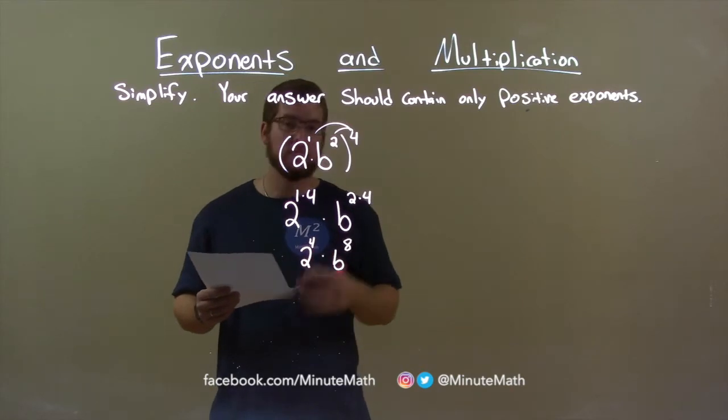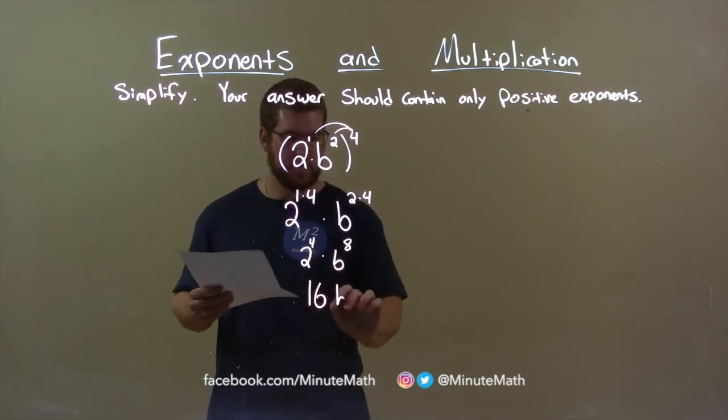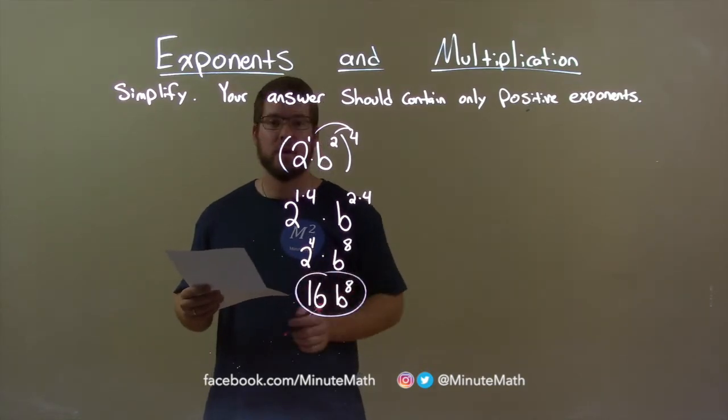Now, 2 to the fourth power we can simplify as 16. Bring down just the b to the eighth power, and there we have our final answer, 16b to the eighth power.